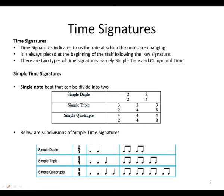Time signatures indicate to us the rate at which the notes are changing. It is always placed at the beginning of the staff, following the key signature. There are two types of time signatures, namely simple time and compound time.